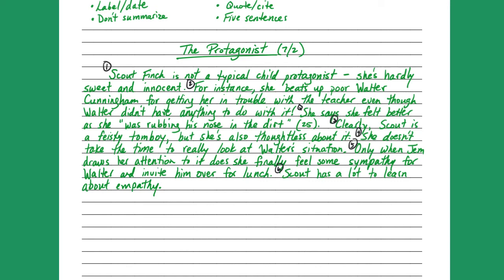So here's my reader's notebook entry for this passage. I labeled it the protagonist because Scout is who I'm analyzing and she's the protagonist. But you could use these same analyzing techniques of indirect and direct characterization with the antagonist, with the secondary character — works for all kinds of characters. So my little checklist: label and date, got it. Don't summarize — we'll see in a second. Quote and cite — I do have a quote and a citation. And it's actually six sentences, so I went a little over, but that's okay.